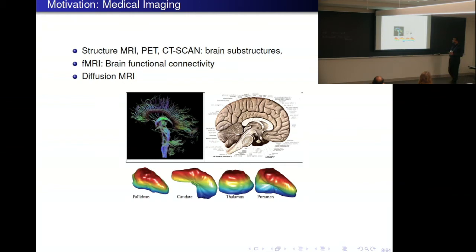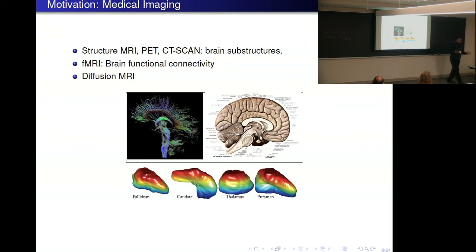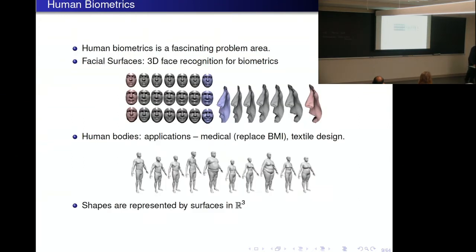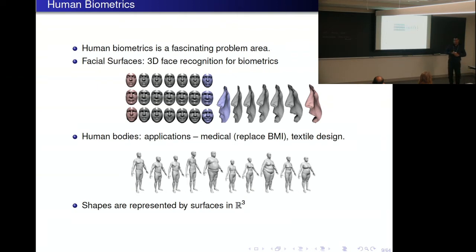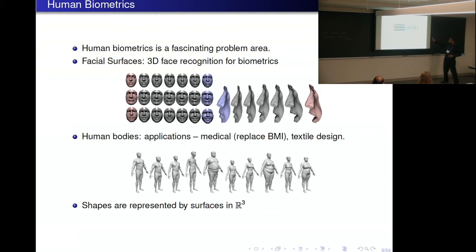This is somewhat an older problem: studying and understanding the brain, using structures of the brain for diagnosis, evaluation, cognitive abilities, and so on. I mentioned human biometrics — human faces are a fascinating area. One can study leaves, but the same amount of technology and science can go into studying faces: what makes faces different, what makes them more beautiful in appearance, the symmetry, and so forth. There is now work on human body shapes.